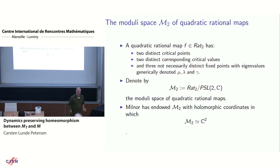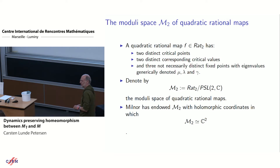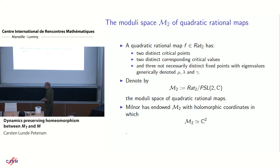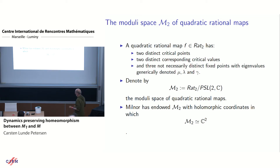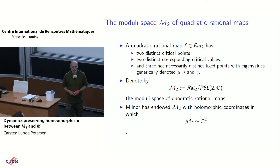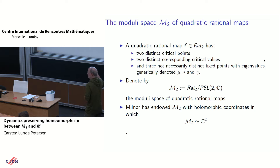It was mentioned that there has been no talks about the Mandelbrot set, so this will be a talk about the Mandelbrot set. But it's also about quadratic rational maps. Quadratic rational maps have three fixed points with multipliers, which we generically denote mu, lambda, and gamma. They have two distinct critical points and two distinct critical values. We call M2 the space of quadratic rational maps modulo conjugation by Möbius transformation. This space M2 naturally has coordinates given by the two first elementary symmetric functions of the multipliers, and these coordinates give an isomorphism to C².